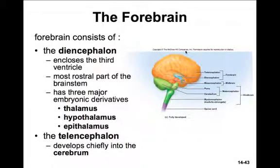Let's move into the forebrain. The forebrain consists of the diencephalon and the telencephalon. The diencephalon is the most rostral part of the brainstem, shown here in blue. It encloses the third ventricle and has three major derivatives: the thalamus, the hypothalamus, and the epithalamus. The telencephalon is represented by yellow here and develops chiefly into the cerebrum.